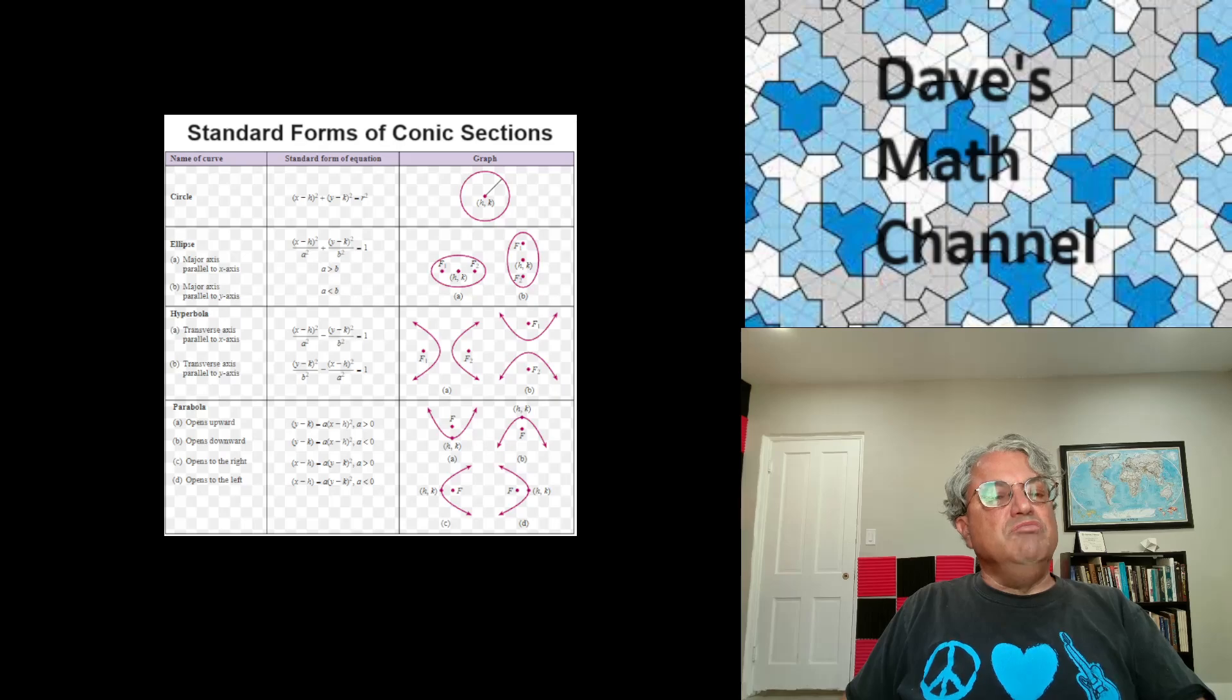And then ellipse, you have like x minus h quantity squared over a squared plus y minus k quantity squared over b squared equals 1. a and b are what are known as the semi-major and semi-minor axes. Actually, if a is bigger, greater than b, then you get an ellipse that looks like the one on the left, elongated along the x-axis. And if a is less than b, you get one that's elongated on the y-axis. I think you still call the major axis the longer. So the major axis could be along the x-axis or along the y-axis, depending on how it's elongated. That's ellipses.